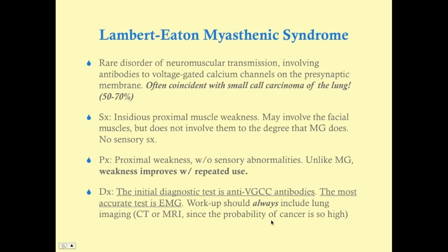Lambert-Eaton myasthenic syndrome (LEMS) is another rare neuromuscular transmission disorder, but here antibodies target voltage-gated calcium channels (VGCC) on the presynaptic membrane — on the nerve, not the muscle as in MG. About 50–70% of LEMS cases are coincident with small cell carcinoma of the lung. Symptoms resemble MG in involving weakness, but LEMS more commonly affects proximal limb muscles rather than facial muscles.